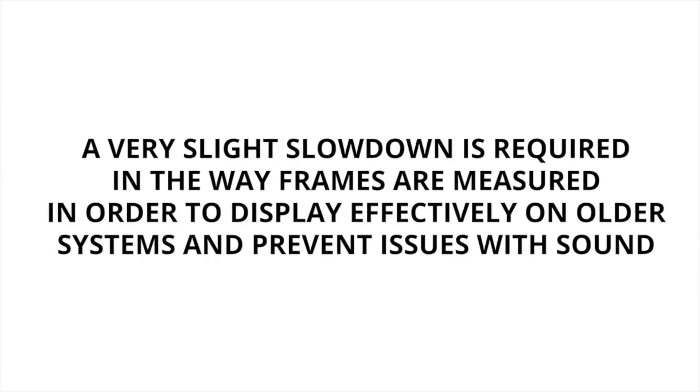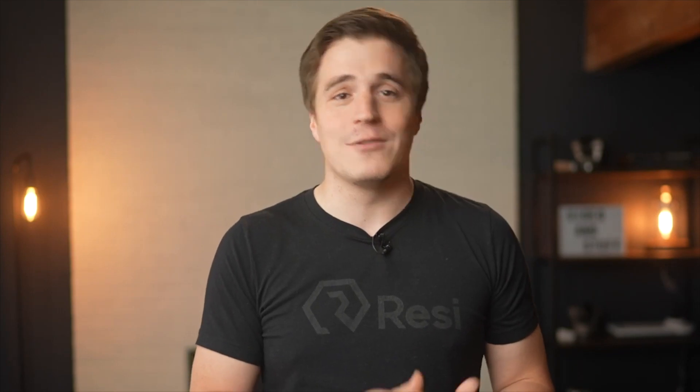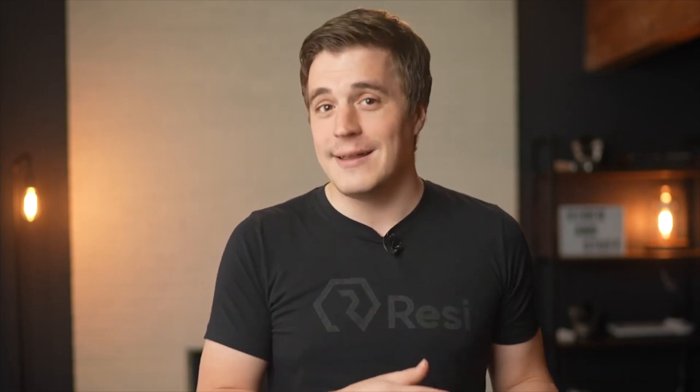As color broadcast TV replaced black and white, a very slight slowdown is required in the way that frames are measured in order to display effectively on older systems and prevent issues with sound. This is referred to as drop frame measurement and doesn't affect the visual image in any way, but is why you might see frame rates described as 23.98, 29.97, or 59.94 instead of whole numbers.